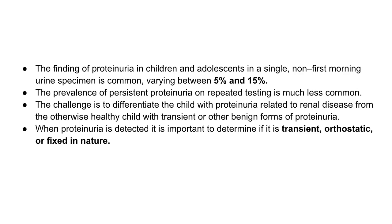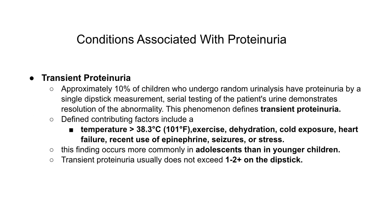When proteinuria is detected, it is important to determine if it is transient, orthostatic, or fixed in nature. Approximately 10% of children who undergo random urine analysis have proteinuria by single dipstick measurement, but serial testing demonstrates resolution of the abnormality. This phenomenon defines transient proteinuria, and contributing factors include fever, exercise, dehydration, exposure to cold, heart failure, use of epinephrine, seizures, and stress. This finding is more common in adolescents than in younger children.